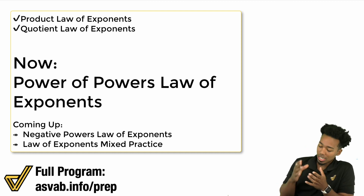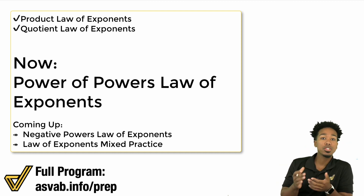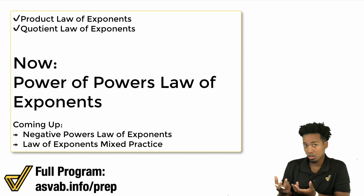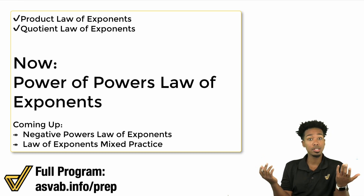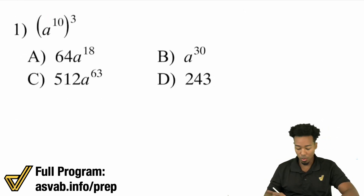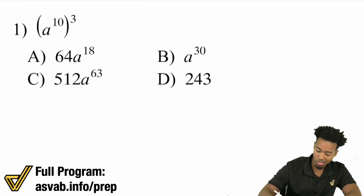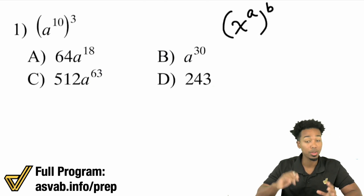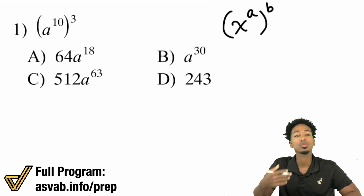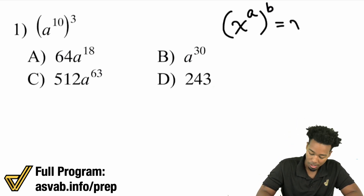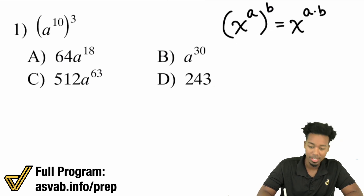Just like everything before this, we've seen that there's a set of rules that we follow. When you have a power to a power — say you have some variable or base to the power of a, inside parentheses, to another power — the rule is you multiply the powers, you multiply the exponents. That would be x to the power of a times b.